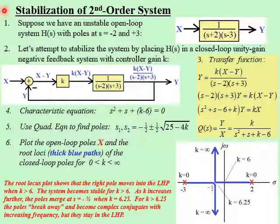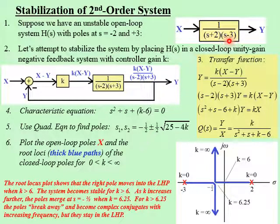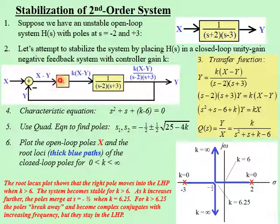Here's one more example of how to stabilize an unstable system using feedback. Let's suppose we have a second-order system whose transfer function H(s) has a quadratic equation in S in the denominator. This system is unstable because it has one pole at S equals negative two and another pole at S equals positive three, which is in the right half plane. We're going to stabilize this system by placing it in a closed-loop unity-gain negative feedback system, again using a controller with gain K.